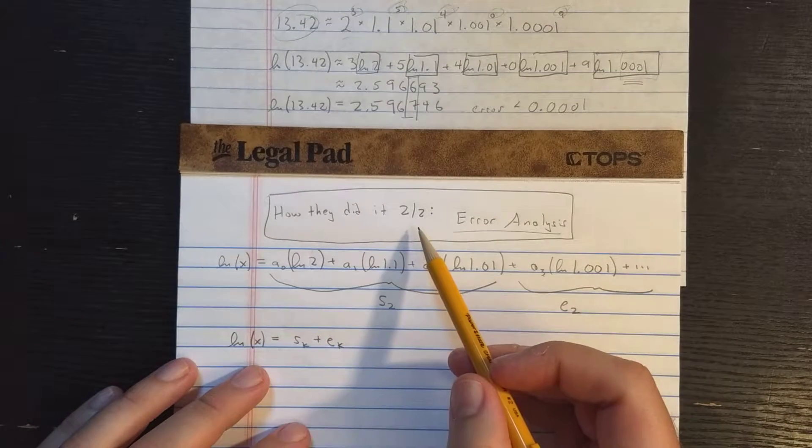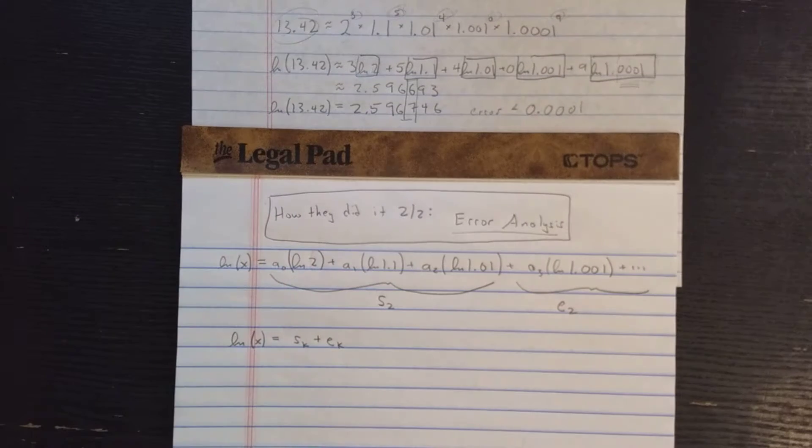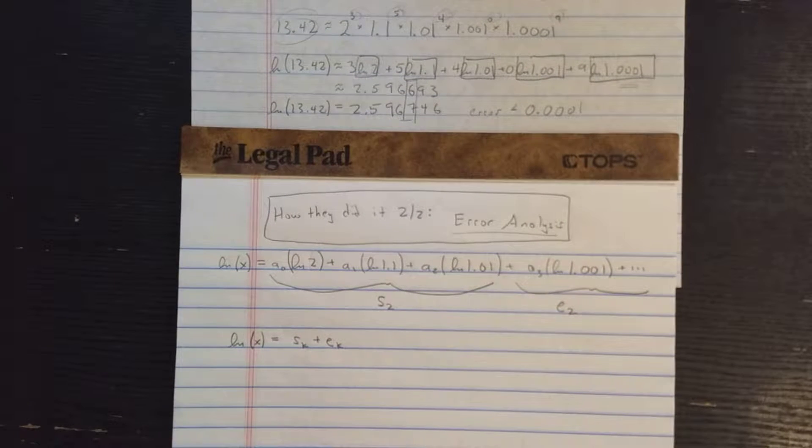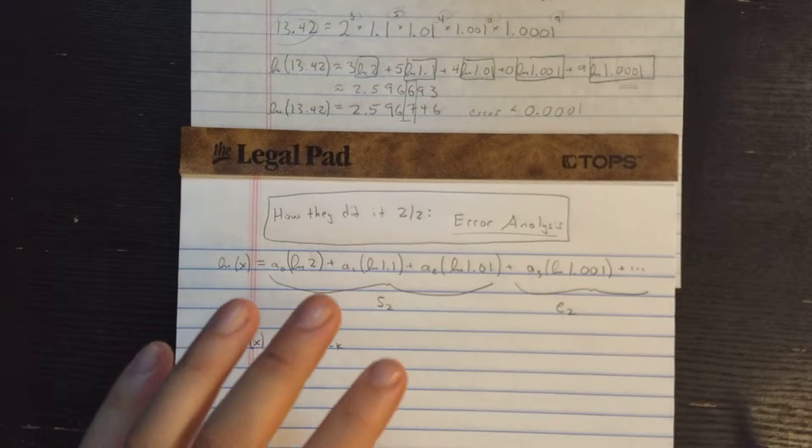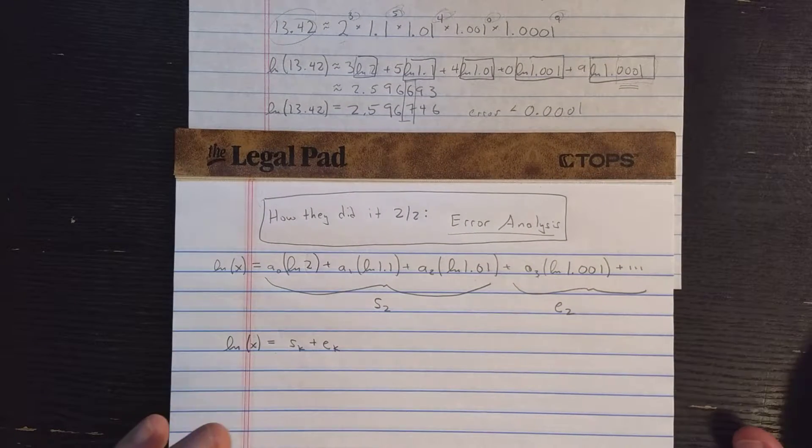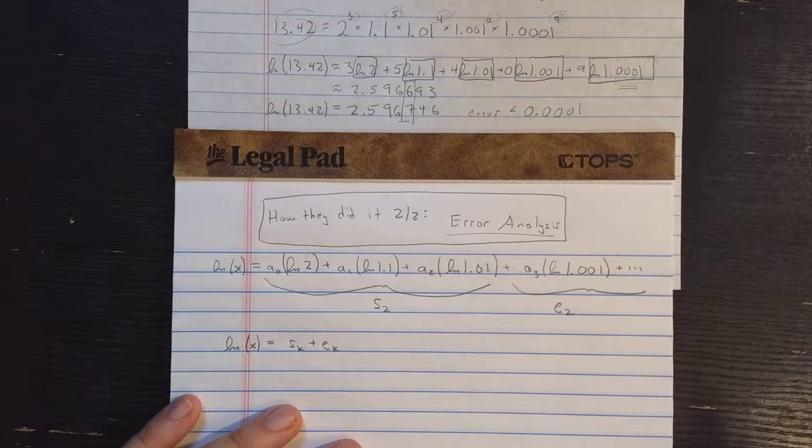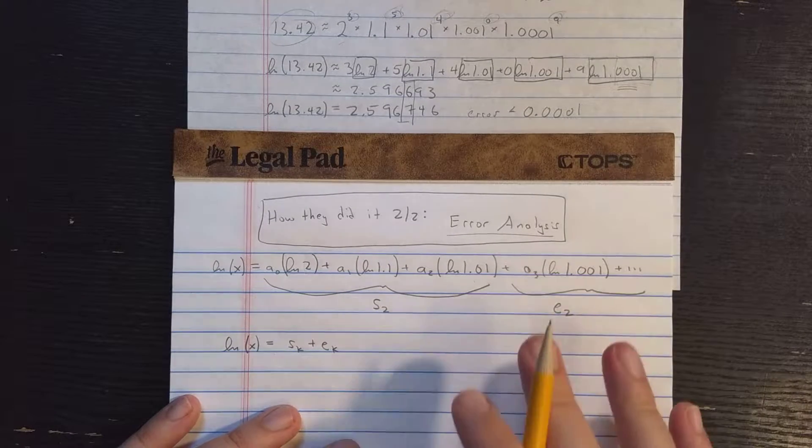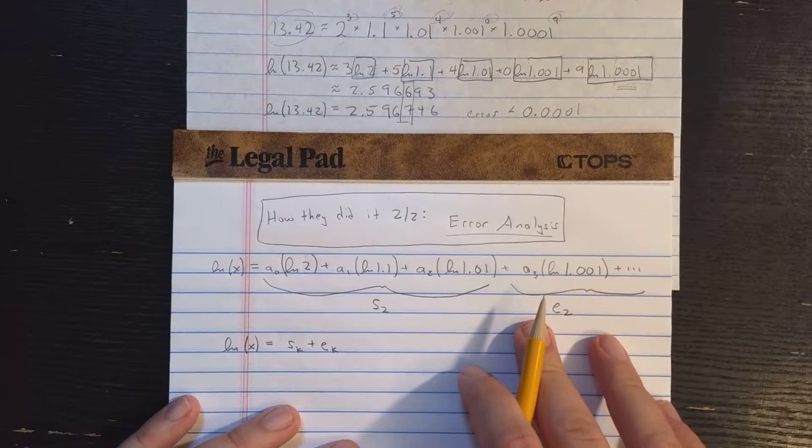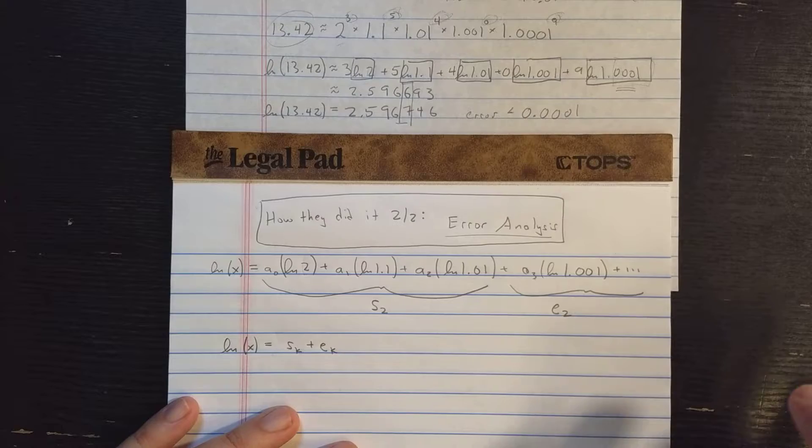Okay, welcome back to part two of my series on how the early calculators did the transcendental functions, especially logarithms, and at the end I'll show exponential functions. Part two of this video is going to be on the error analysis for the algorithm. There's no use in having a numerical algorithm without being able to understand its error. So I'm going to focus just on the theoretical error of the algorithm, not the error introduced by machine precision, so we're going to ignore that.